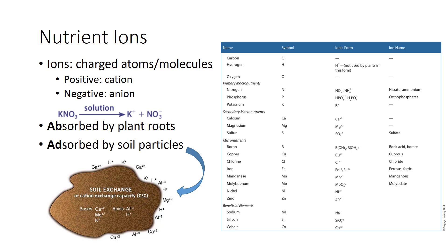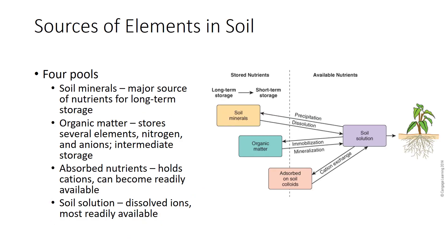Any special name for the ion is also listed. Nutrient elements are present in the soil in four forms. Together, these four pools perform two functions — to store nutrients and to make them available to plants. Minerals are the major source of all soil-supplied nutrients except nitrogen. Soil minerals are the longest-term storage. Weathering frees the elements slowly over time, dissolving the minerals into ions. Organic matter stores large amounts of several elements like nitrogen in the nutrient anions. Organic matter is an intermediate-to-long-term form of storage, since elements are freed for plant use by decay. Some nutrients in fresh organic matter are released fairly quickly, while those in humus are released more slowly.